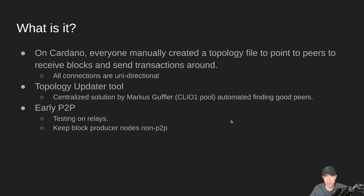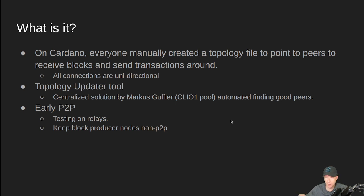Then we moved on to the early days of P2P, where we were testing relays only and keeping our block producer nodes in non-P2P mode. In early P2P, the node looks at the ledger for registered relays — when you register a pool, you usually register some relays that people can connect to, and that's what the node uses for making its outgoing connections.